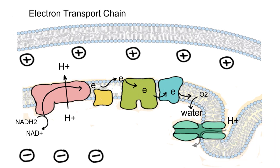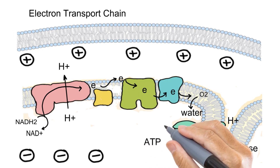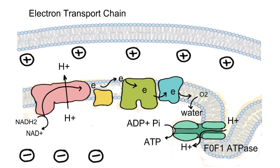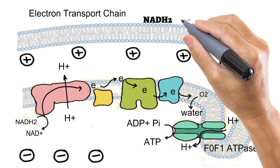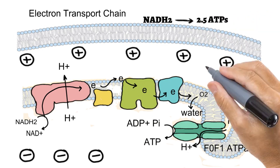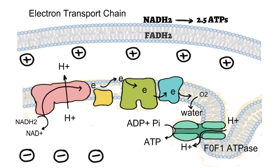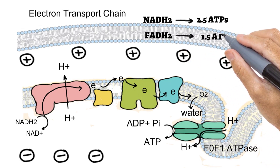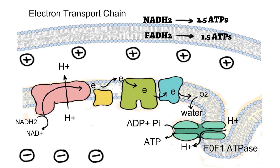The protons are then transferred back to the mitochondrial matrix through a molecular motor called F0F1 ATPase. When protons pass through this motor, it catalyzes a reaction in which ATP molecules are generated from ADP plus inorganic phosphate. If one NADH2 is oxidized through this complete process, 2.5 ATPs are generated. If one FADH2 is oxidized, it generates 1.5 ATPs.